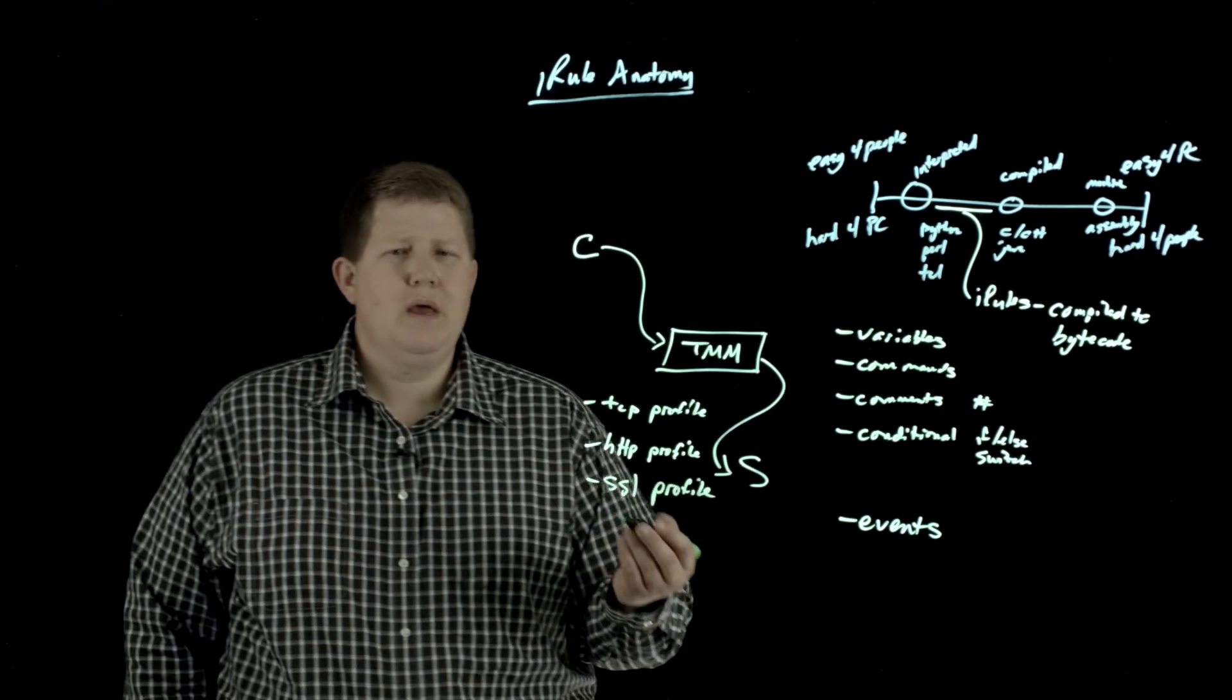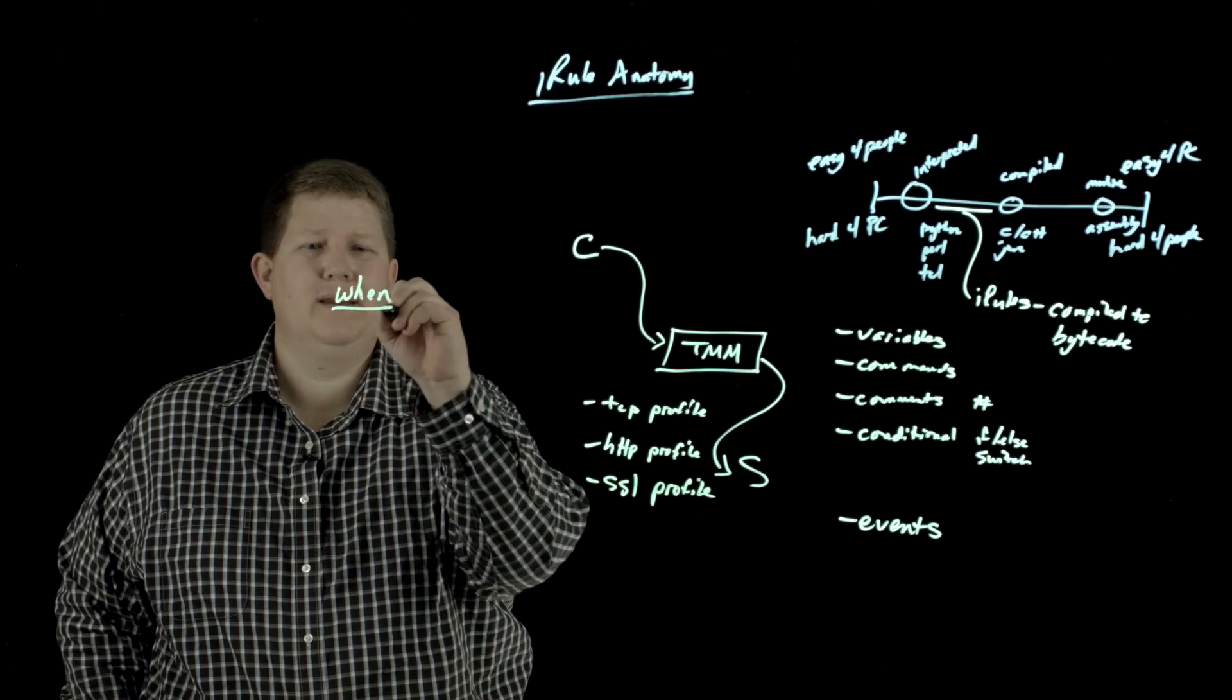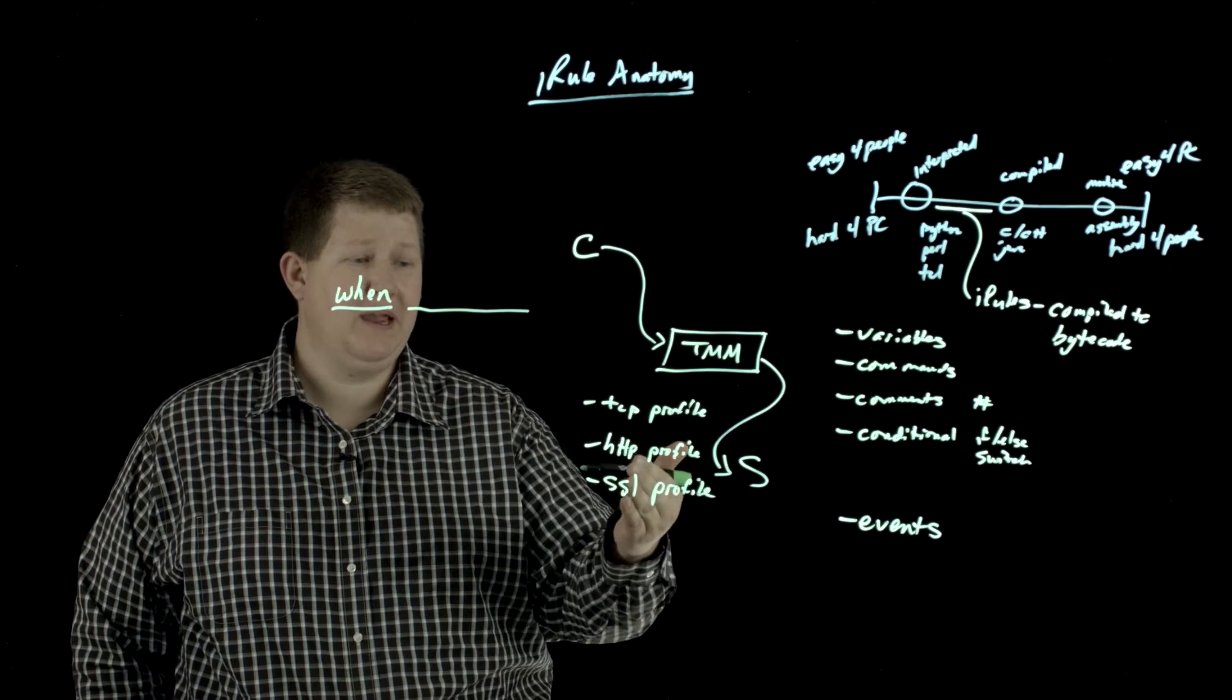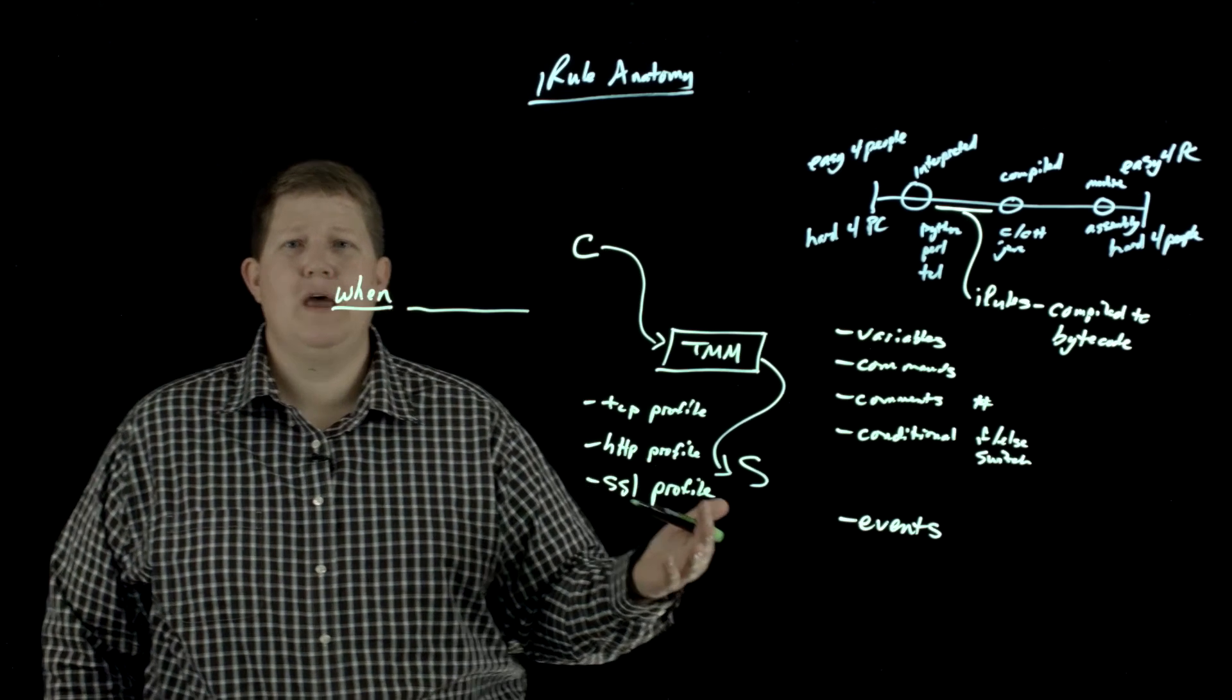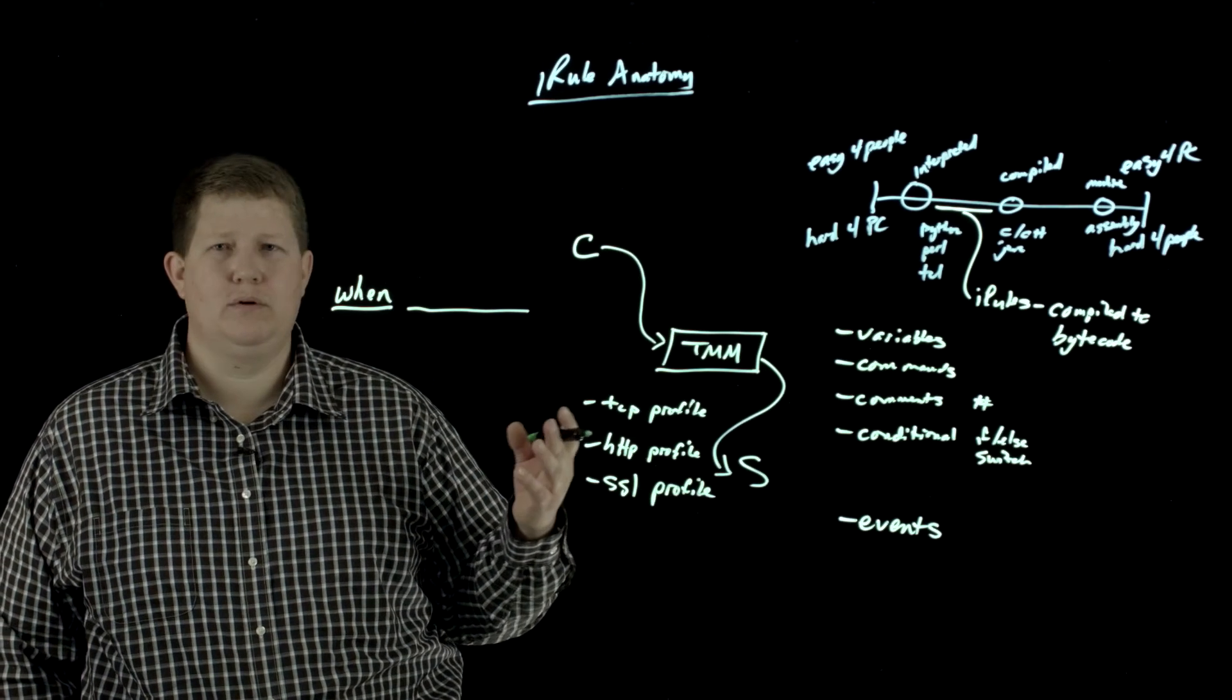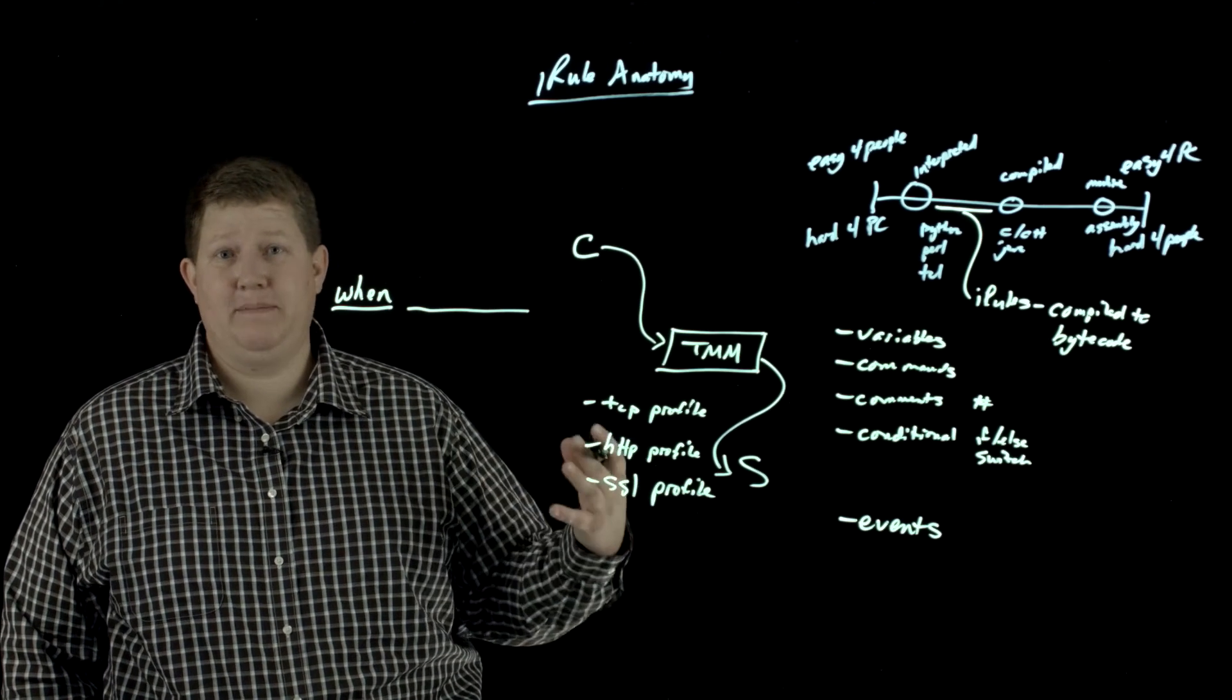So when you look at an iRule, the syntax of the code is 'when' - when starts an event. So you'll have any number of events. Now when you have TCP, HTTP, and SSL profiles attached to your virtual server, that gives you access to HTTP request and response events, it gives you access to client SSL handshake events, it gives you access to TCP data and the client accepted event.